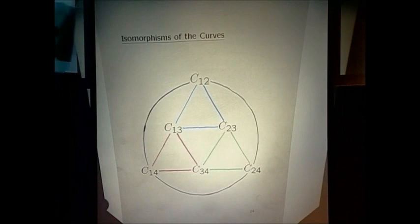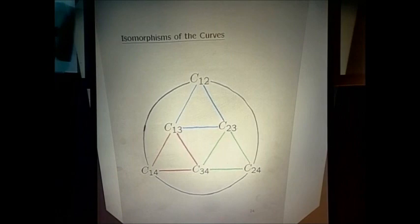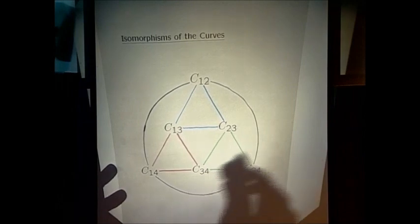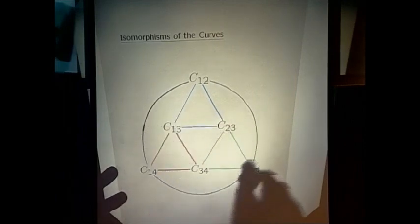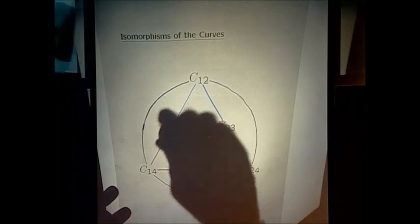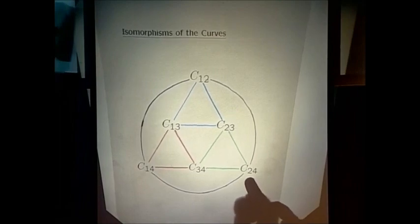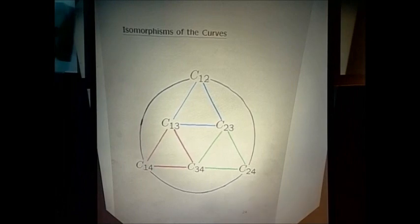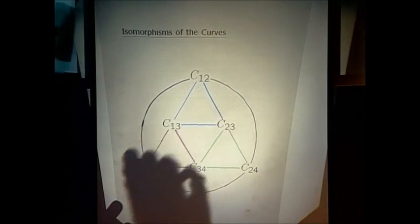Now suppose you do a quadrilateral that has all four different colors. If you go around that quadrilateral that has four different colors, it's not the identity either — you end up translating your genus one curve by a point on the Jacobian. It's a very non-trivial map; you actually end up translating by a point on the Jacobian. If T is non-degenerate — if its discriminant is non-zero — then it will be a non-zero point. It could be a torsion point or an infinite-order point.